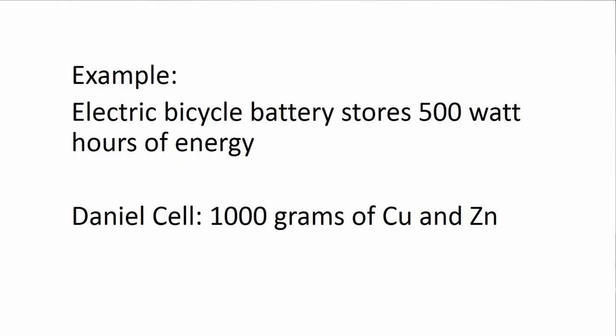So an electric bicycle runs at about 500 watts. You might want it to run for about an hour to get you to the store and back. That means that you're going to need about 500 watt hours of energy storage. Now given the energy density of the Daniel cell, that's going to require quite a lot of mass of battery.